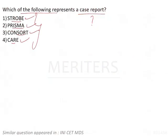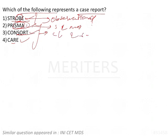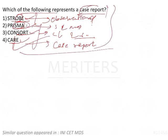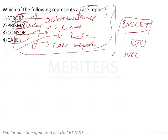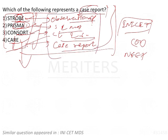To summarize: STROBE is for observational studies; PRISMA is for systematic review and meta-analysis; CONSORT is for clinical trials and systematic review and meta-analysis; and CARE is for case reports. The question is about case reports, so CARE is the answer. This is a PG-level question that appears in INISET and may appear in NEET as well. Only the full forms and which study type each acronym corresponds to are important — don't go too deep into these topics.